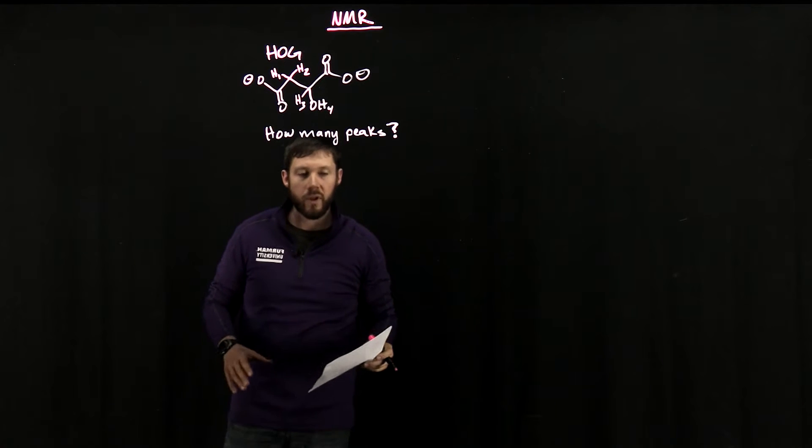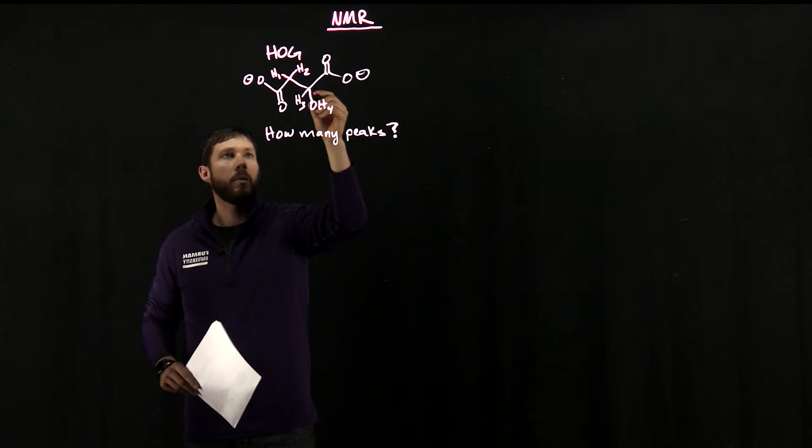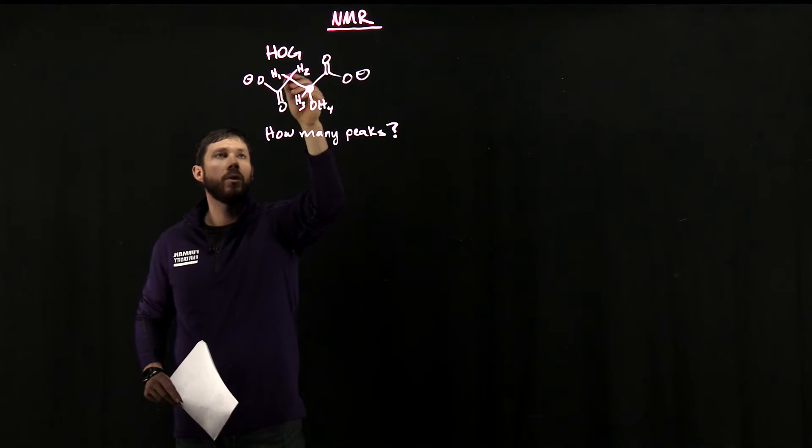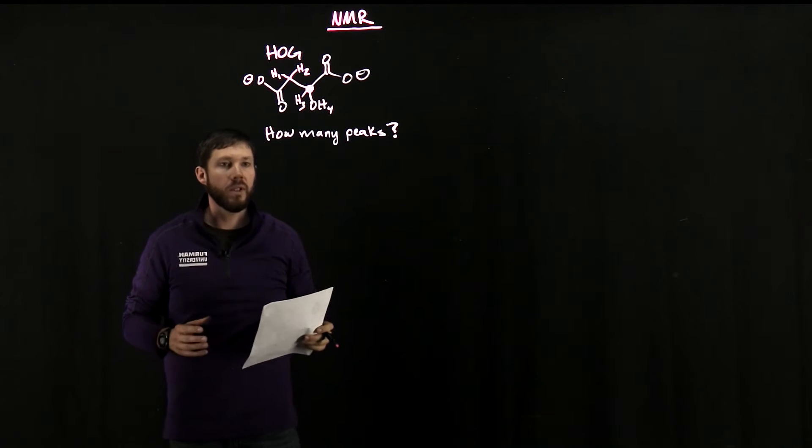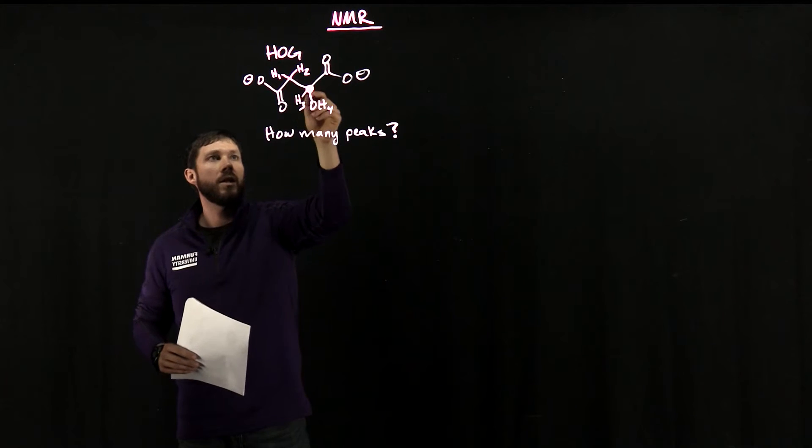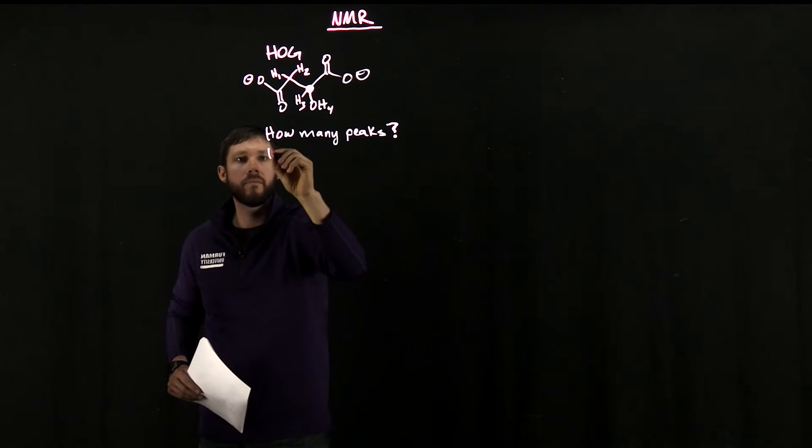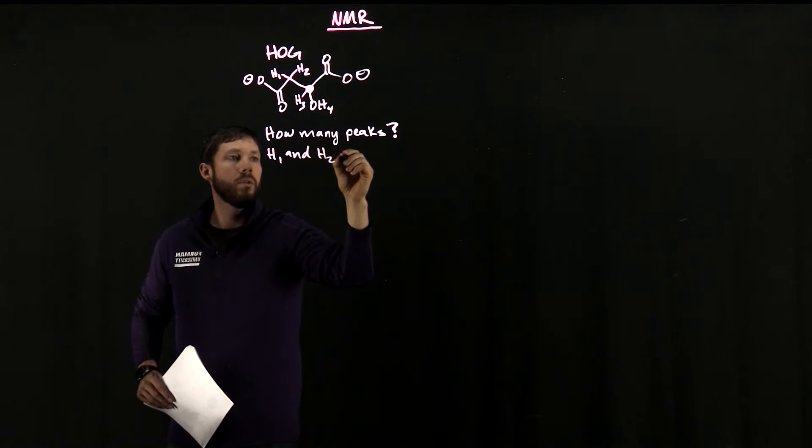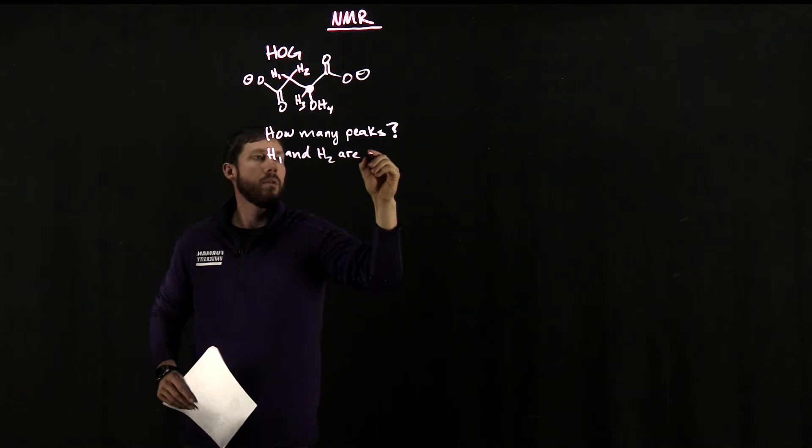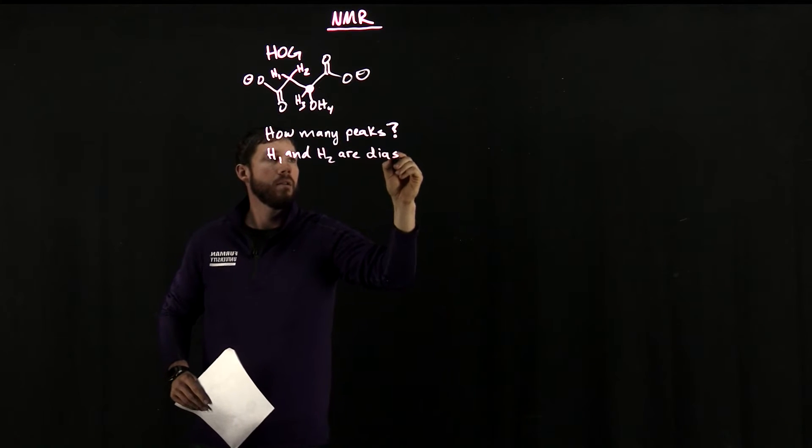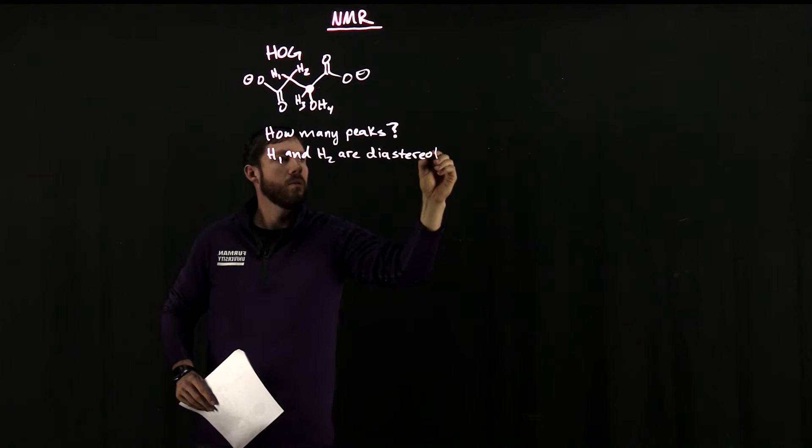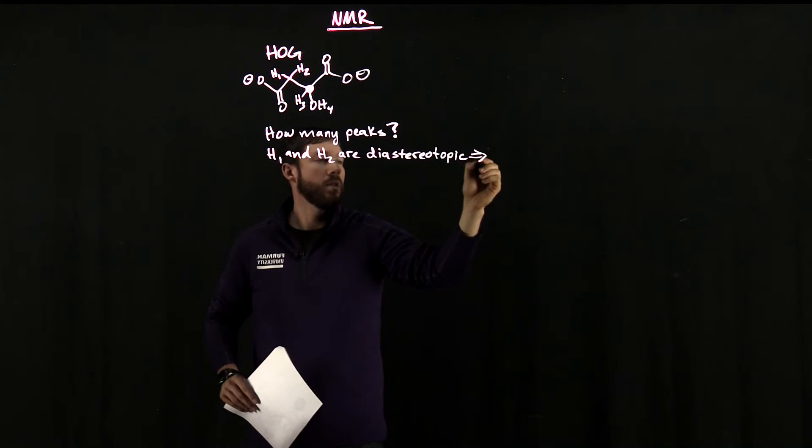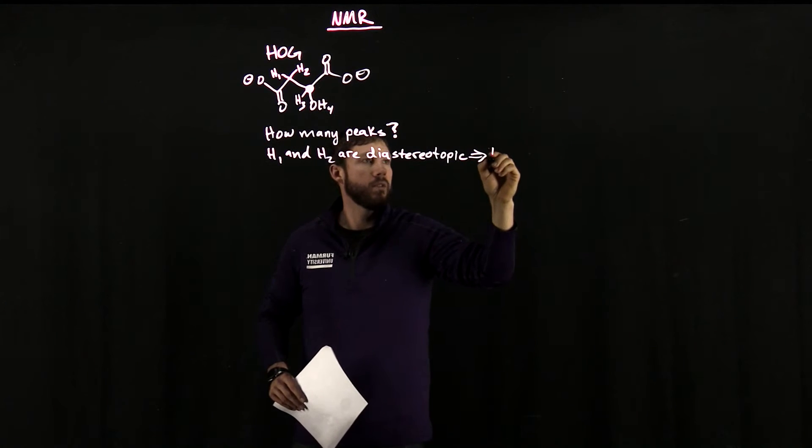Before we go any further, we also need to identify that this particular molecule has a chiral center right here. And because of this, H1 and H2 are going to be diastereotopic protons, meaning that they each experience this chiral environment differently. So H1 and H2 are diastereotopic, and what this translates into is they will have different signals in the NMR.